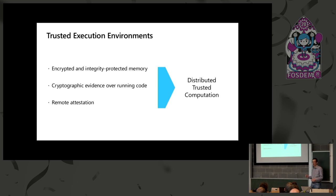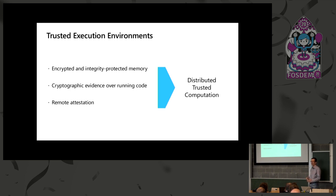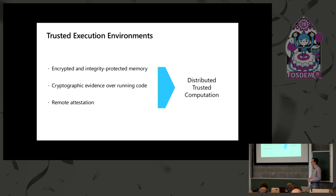With trusted execution environments, we get encrypted and integrity-protected memory. This is key to ensure that the operator running the nodes cannot see anything happening inside the node. We want cryptographic evidence over running code — the ability to assert at a distance what's running — and remote attestation. This gives us distributed trusted computation: we can spin up a number of enclaves, verify they are running in enclaves, know exactly which code they're running, and distribute our application with confidence that information won't be leaked or suffer integrity issues.